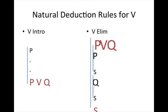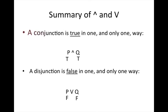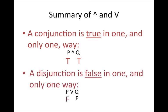Remember, when you have a disjunction, it makes a lot of sense to use disjunction elimination. Just a quick summary: a conjunction is true in one and only one way — that's when each of the conjuncts is true. A disjunction is false in one and only one way — that's when each of the disjuncts is false. Understanding these truth definitions helps us make sense of how we can introduce or eliminate a conjunction or a disjunction. I hope this has been helpful.